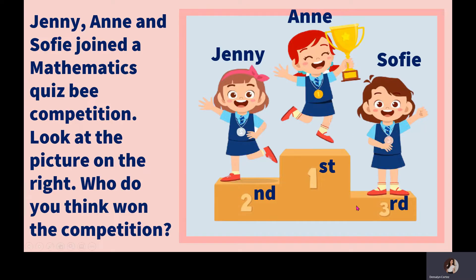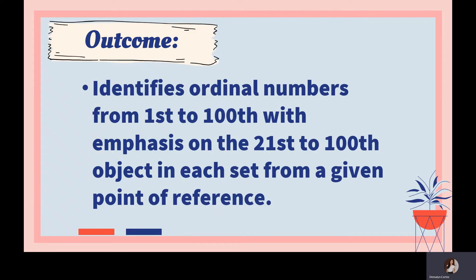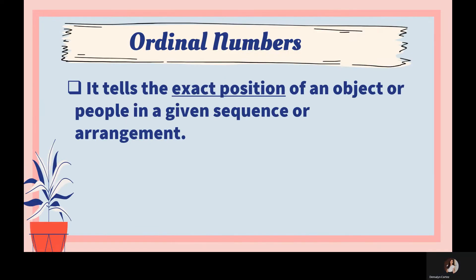So this is our lesson today. We are going to identify ordinal numbers in real life, and we will write them in word form and in symbol. Our objective is to identify ordinal numbers from first to 100th, with emphasis on the 21st to 100th object in each set from a given point of reference. An ordinal number tells the exact position of an object or person in a given sequence or arrangement.